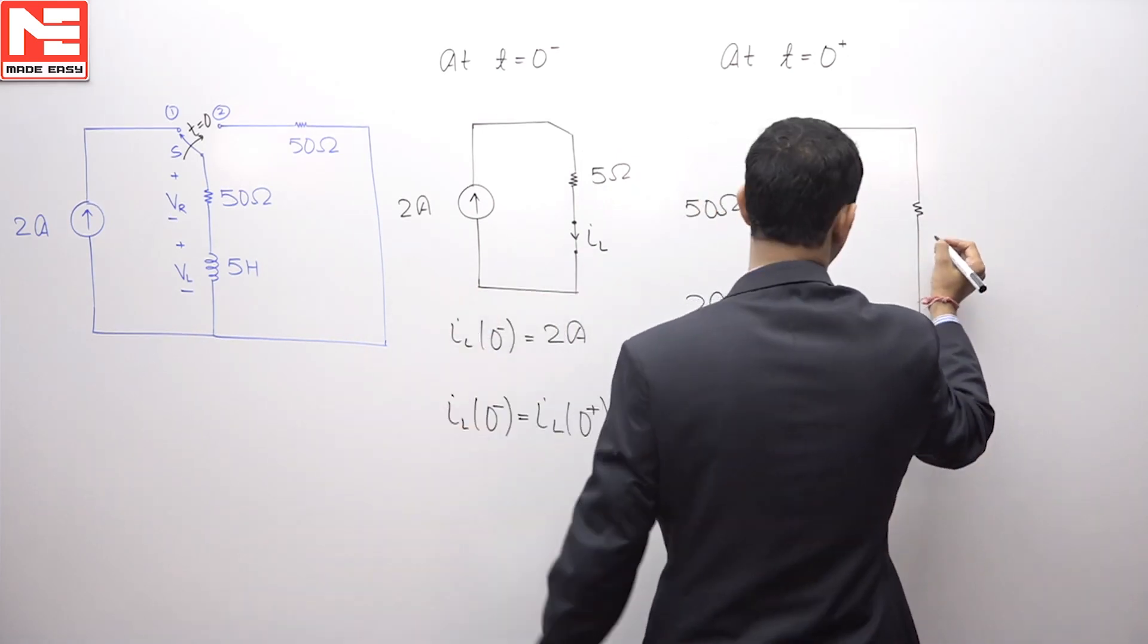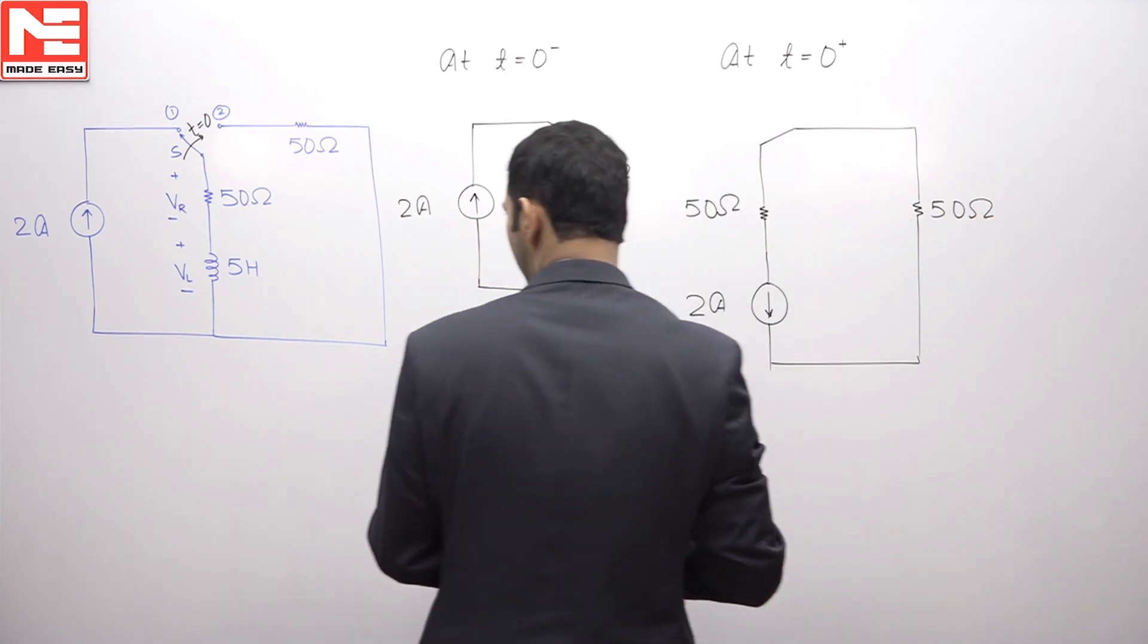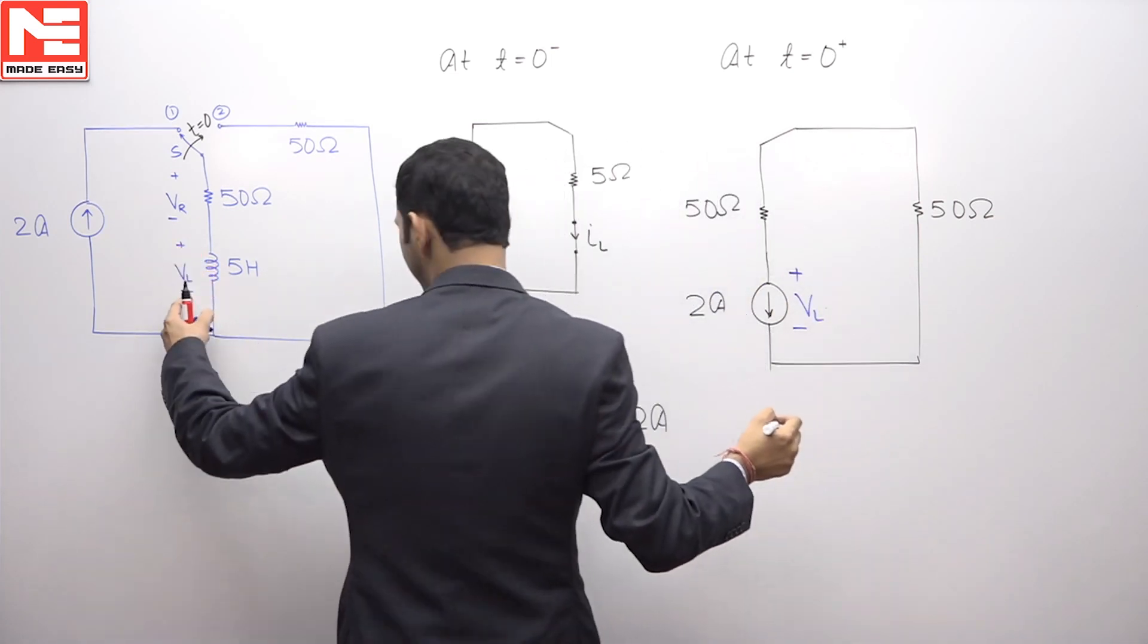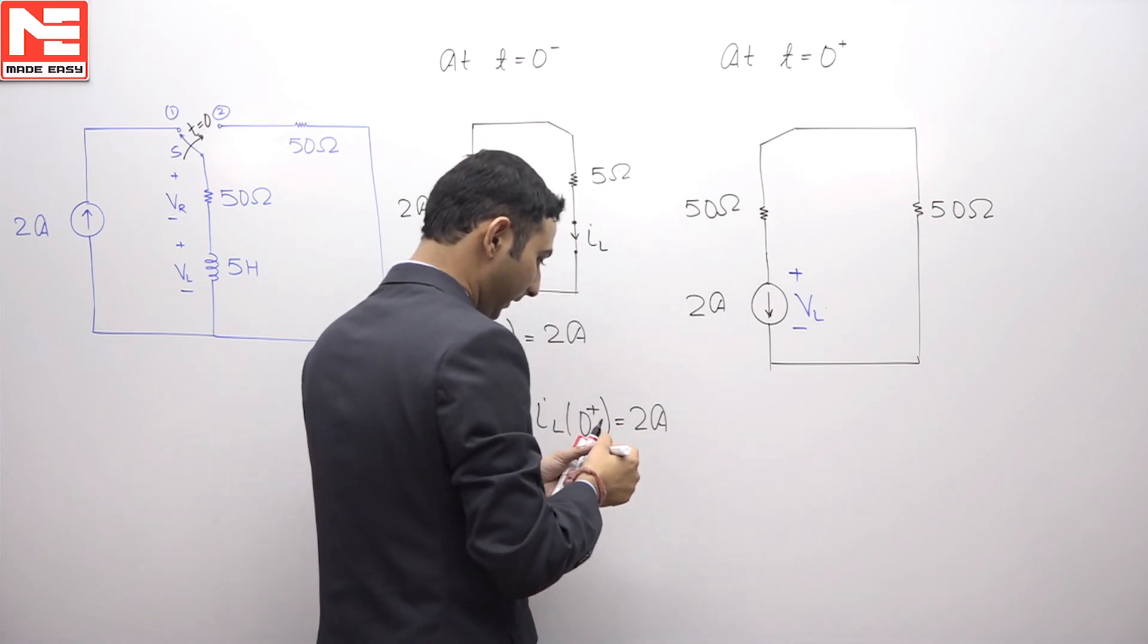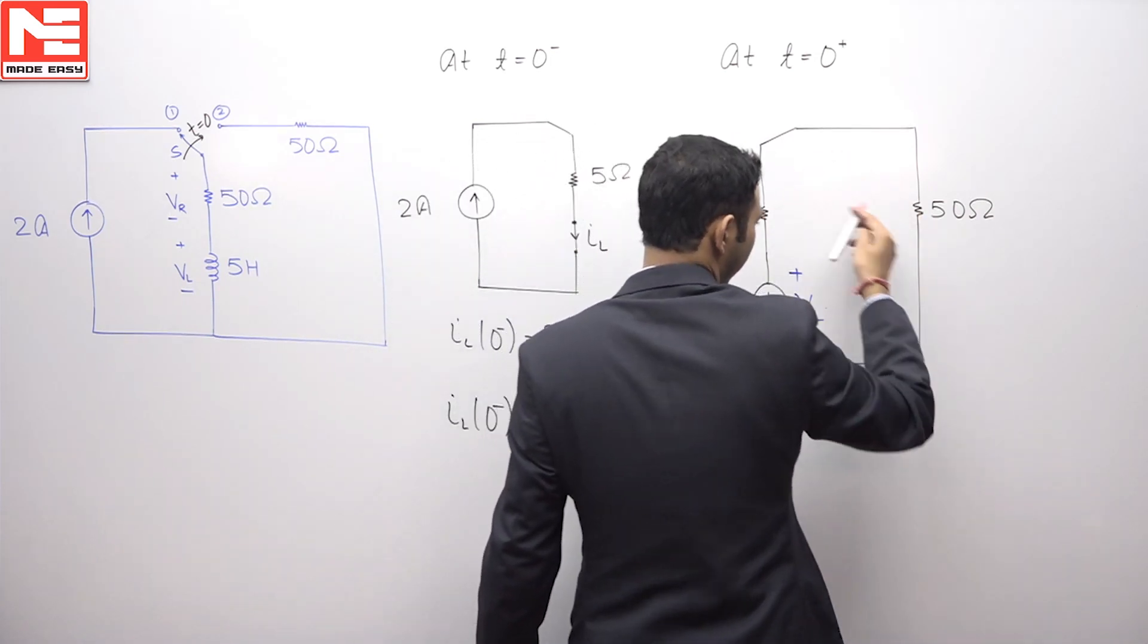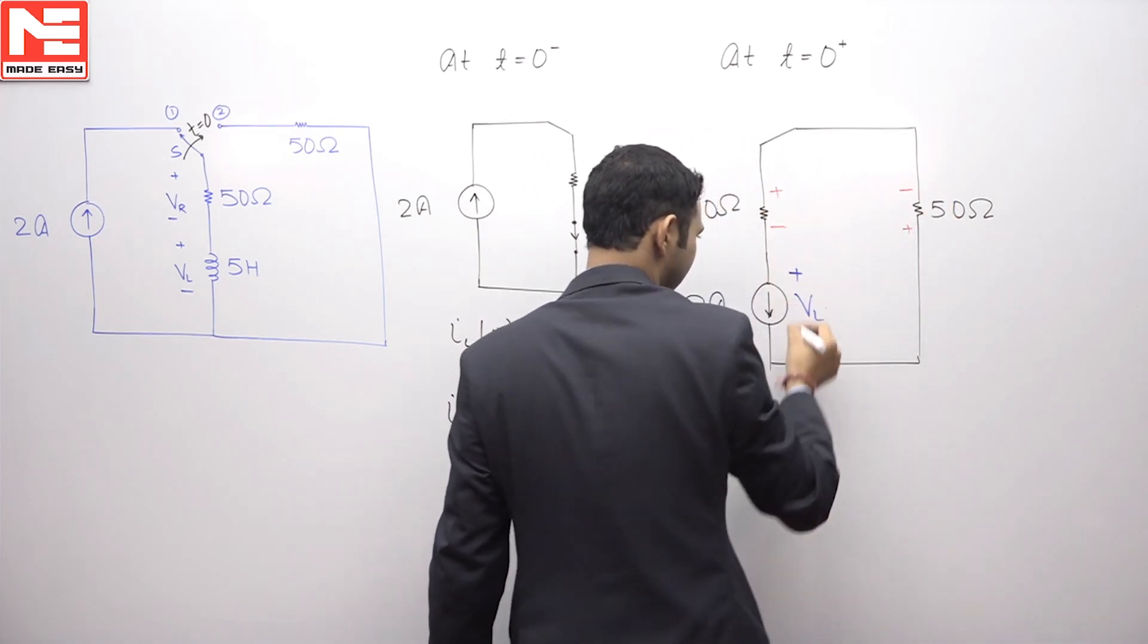Here we have resistance of 50 ohm and we have to calculate the value of voltage VL whose polarities are given like this in the equation, that is plus minus VL. Now, if you see current is flowing like this, therefore, the voltage drop will be plus minus, plus minus.